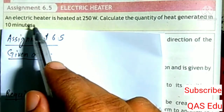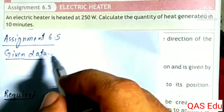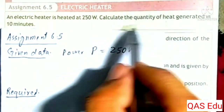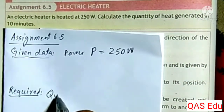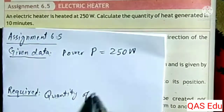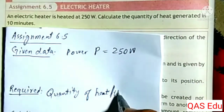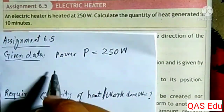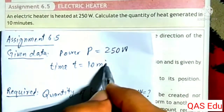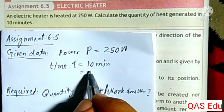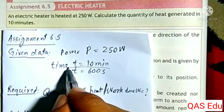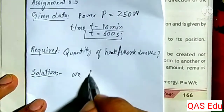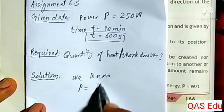Example 6.7: An electric heater rated at 250 watts. The given data is power equals 250 watts. We need to calculate the quantity of heat generated in 10 minutes. Time is 10 minutes, converted to seconds: 10 multiplied by 60 equals 600 seconds. Using Power equals Work divided by time.